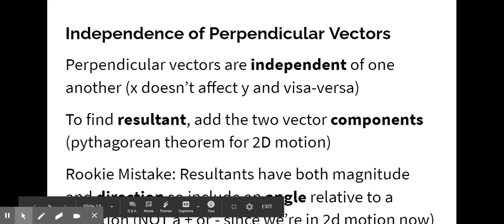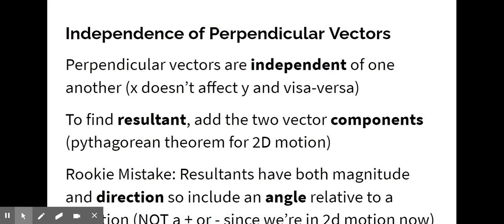Okay, so perpendicular vectors, so our x and y, they're perpendicular with each other. They're independent of one another. X does not affect y. Y does not affect x. They're independent. They don't need each other. They do both affect the motion of the object, but they do not affect each other.